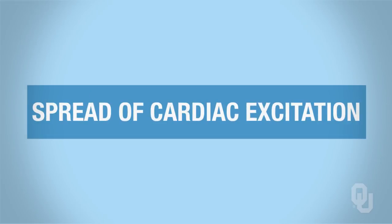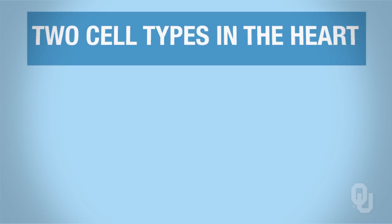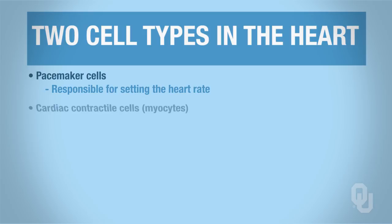In order to discuss the spread of the excitation or the spread of the action potentials through the heart, you need to remember that there are two cell types in the heart. There are the pacemaker cells, which are responsible for setting the heart rate, and there are the cardiac contractile cells or the myocytes that are responsible for the actual contraction of the heart.